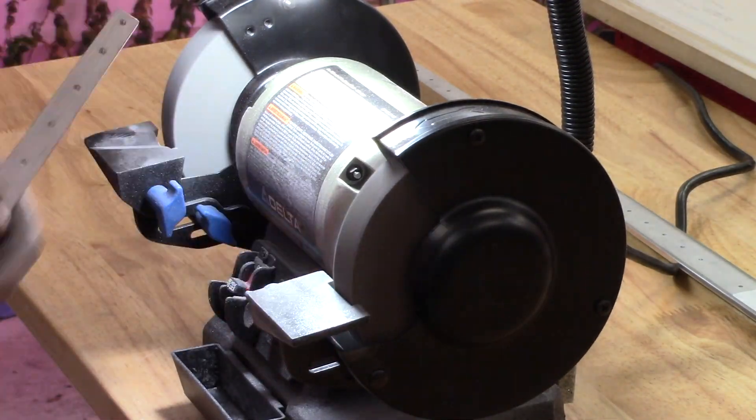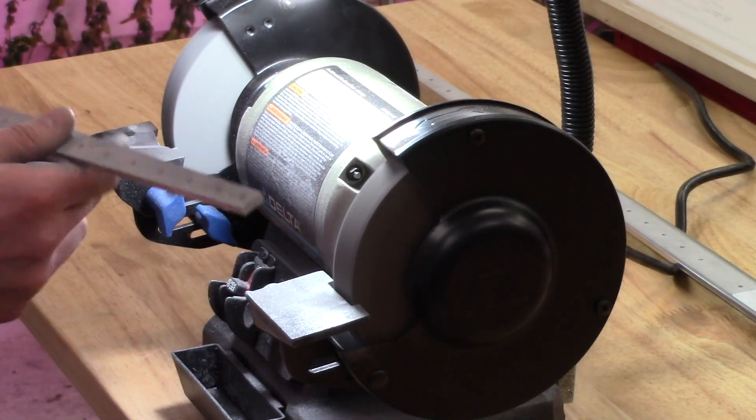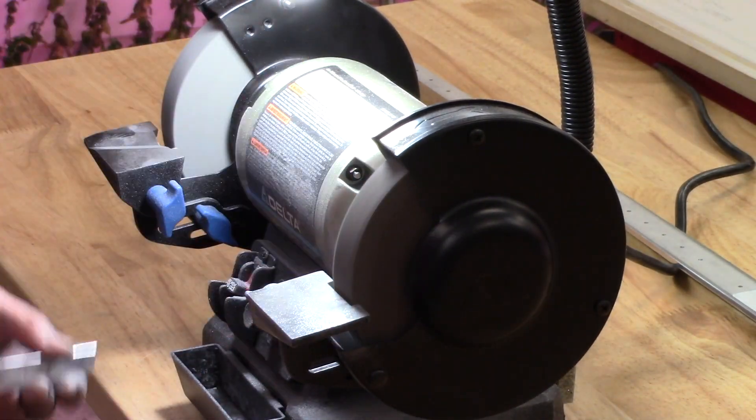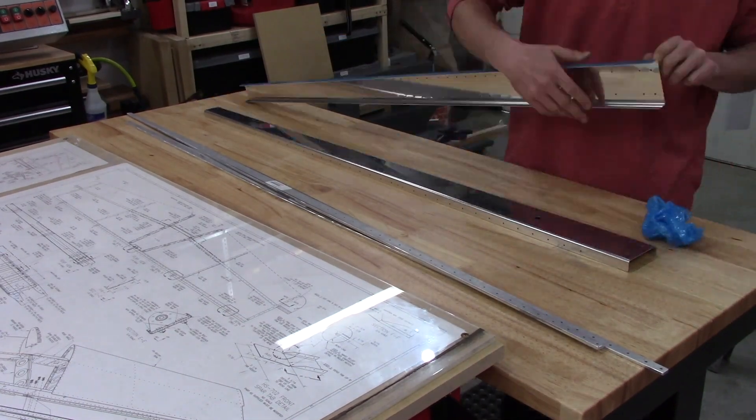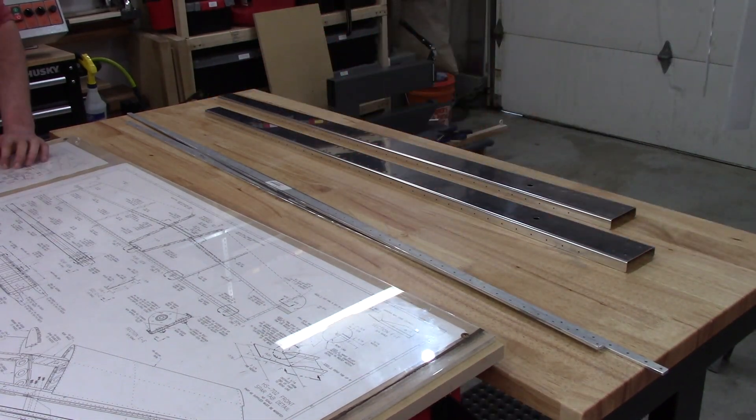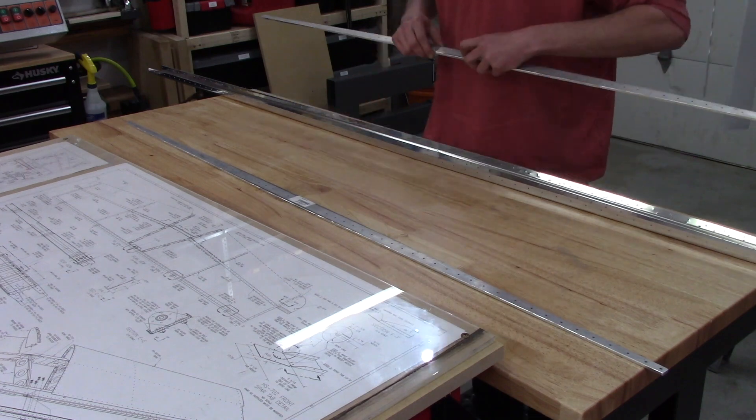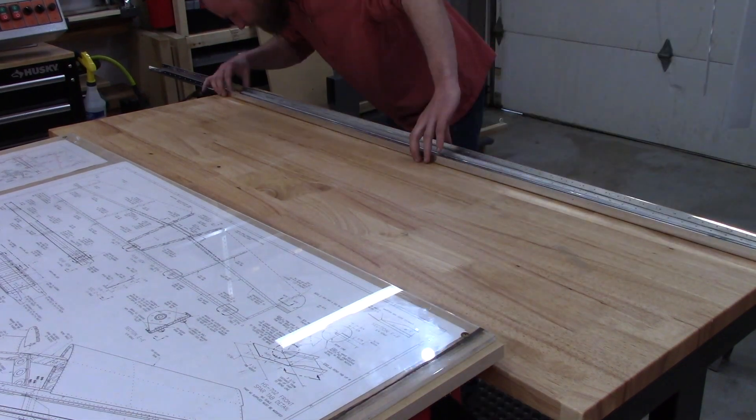I didn't completely round off the edges on the rear spar doublers mostly because I wanted to keep moving along. I'll take care of that final forming of those later on before I go to prime.